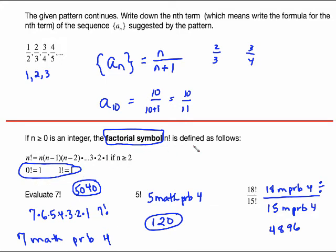Also, 1 factorial is 1, because according to the definition you go all the way down until you reach 1 — that's where you stop. So to do 1 factorial, we stop by just doing 1. Both 0 factorial and 1 factorial equal 1. We need to look at factorials because there are examples in this section and things at the end of this chapter that deal with factorial.